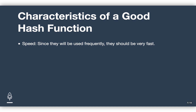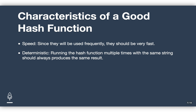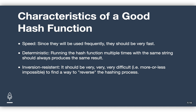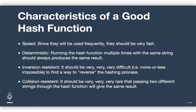Let's talk about what makes a good hash function. First, a hash function should be fast. Since they will be used frequently — basically every time somebody wants to log into our site — they should be very fast. Second, they should be deterministic, meaning that if you run the same string through a hash function multiple times, you should always get the same result back with no randomness. Third, the hash function should be inversion resistant — it should be practically impossible to decrypt a hash to get the original message back. Finally, hash functions should be collision resistant: it should be extremely rare for two different strings to produce the same hash output. We want to avoid collisions, as they are important to how we verify users.